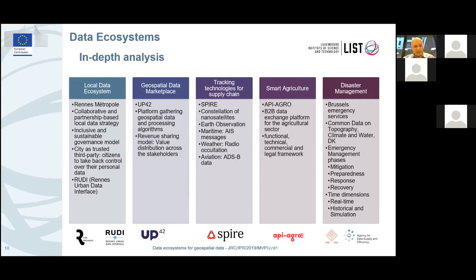Rennes is also experimenting with the concept of the city as trusted third party, allowing citizens to take back control over their personal data. The second ecosystem is the geospatial data marketplace, illustrated by Up42. Up42 is a marketplace and developer platform providing access to both data and analytics from different sources, and offers value distribution models that are changing the way geospatial data is accessed and analyzed.